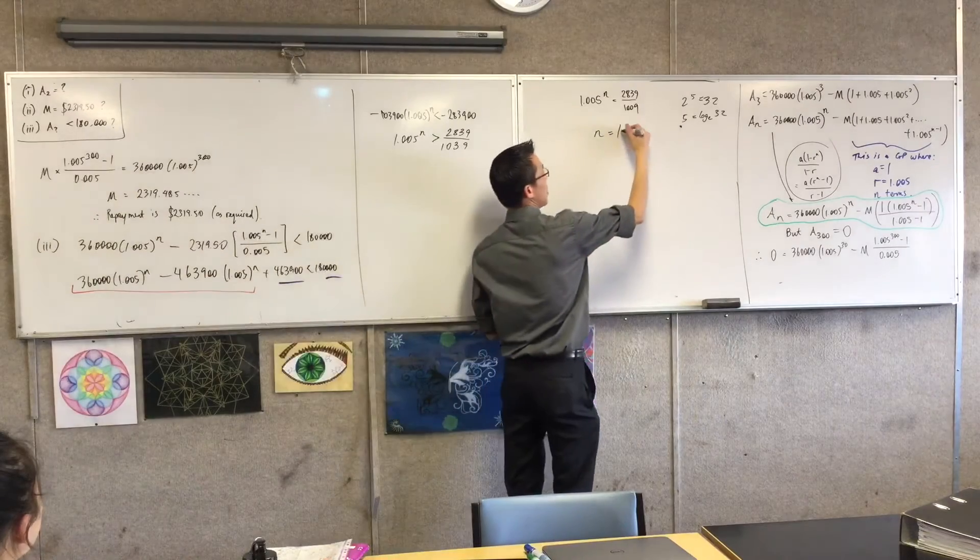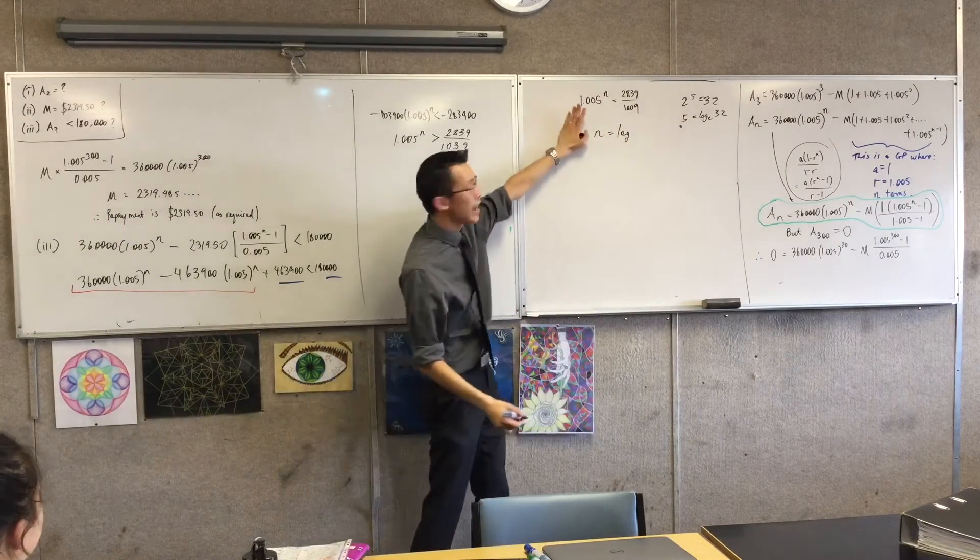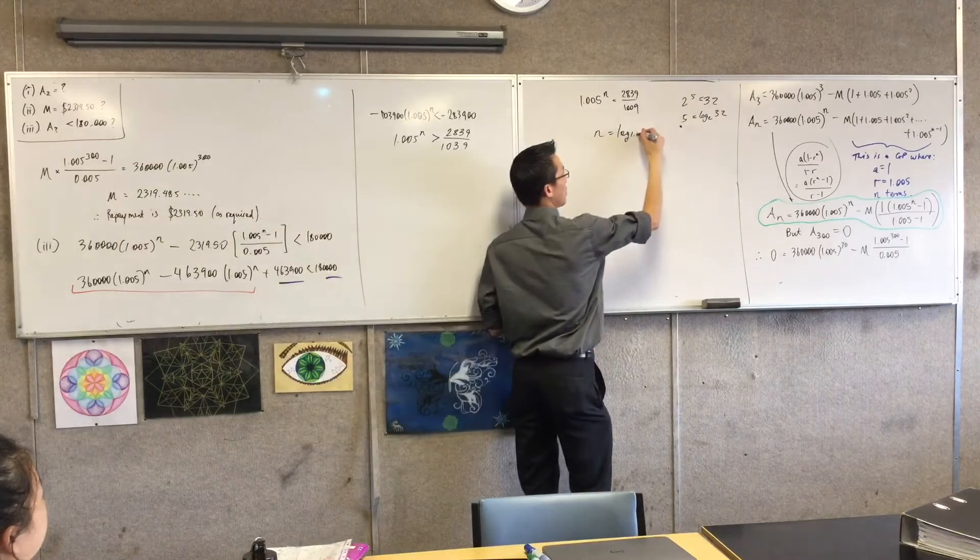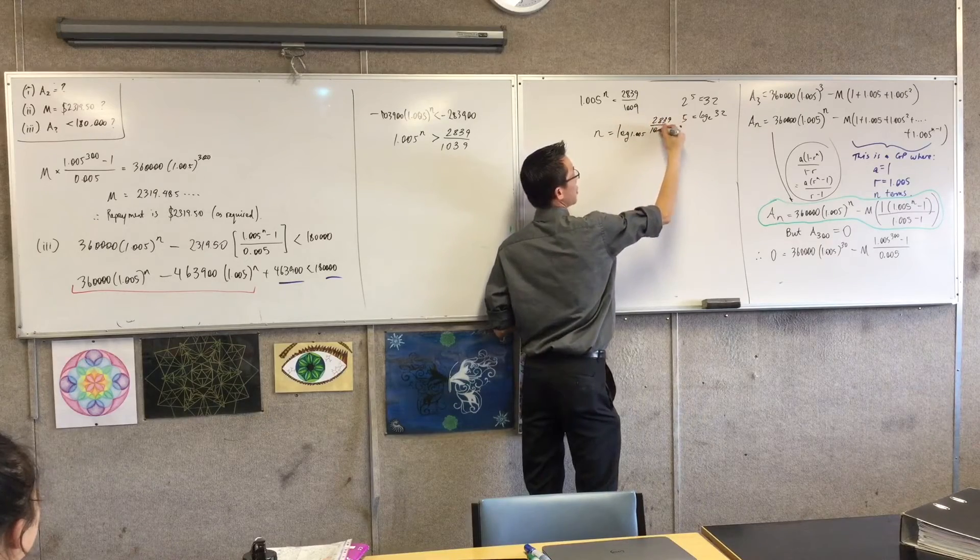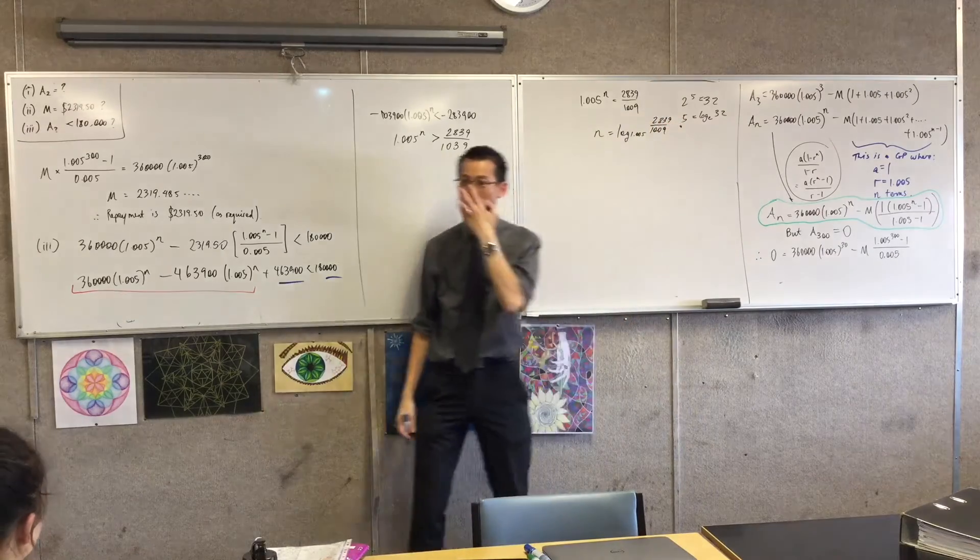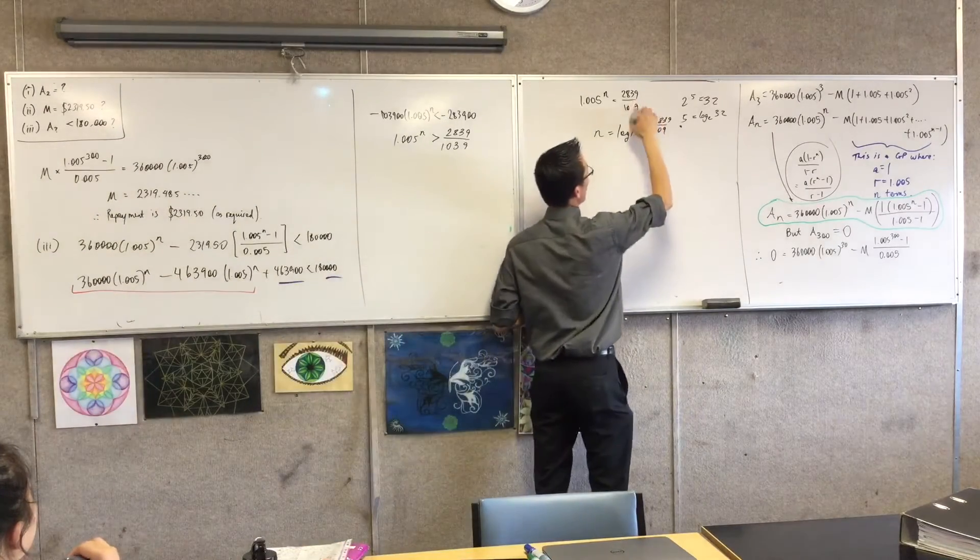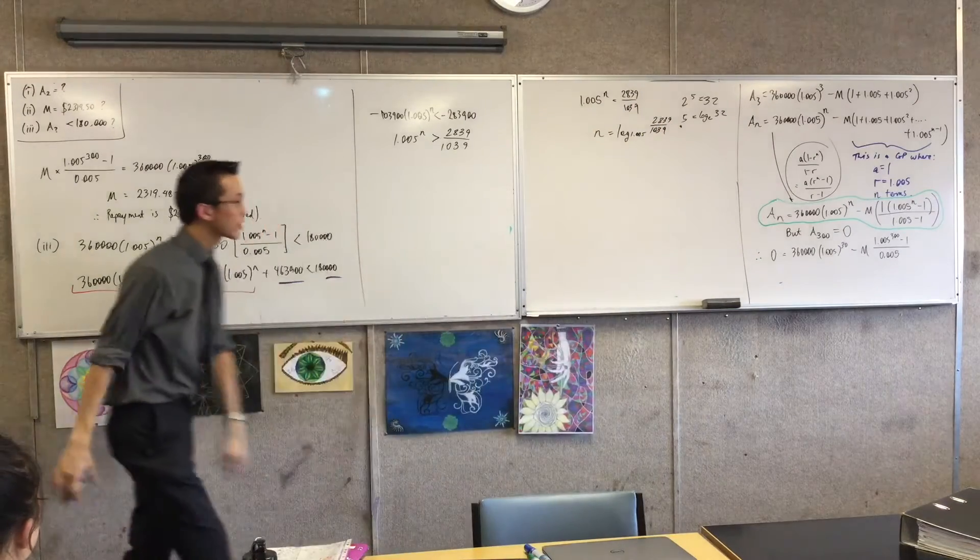So therefore here, I could write that as log. Now, what's the base? 1.005. Yeah, you always do the base first, because the base here will be the base of the log. So it's 1.005, and then I have this awkward-looking fraction up here, okay? So, 1.039 over 1.005. Oh, yeah, you're quite right. Okay. Now, that's one thing I could do.